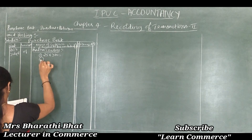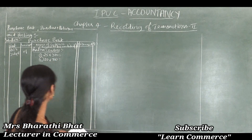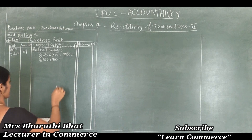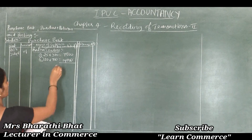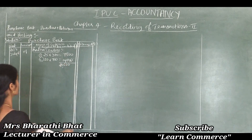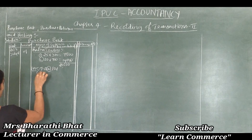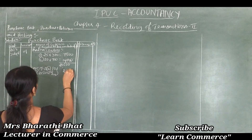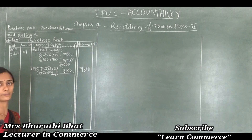From 21,500 we deduct trade discount at 10%: 21,500 × 10/100 = 2,150. So the net amount in the amount column is Rs. 19,350. Next entry: purchase of following goods on credit from Bombay Fashion House on July 8, serial number 2. We purchased 10 items at Rs. 500 and 20 items at Rs. 100, plus 5% trade discount.